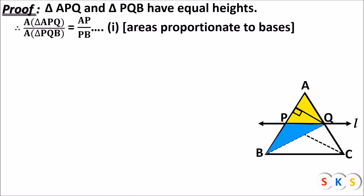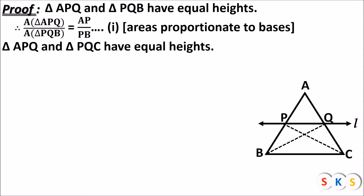Now we take another pair: triangle APQ and triangle PQC. These two triangles also have equal height. You can see in this figure that the height drawn for triangle APQ is also the height of triangle PQC. Therefore, area of triangle APQ upon area of triangle PQC equals AQ upon QC. This is equation two.